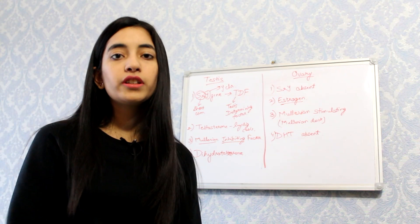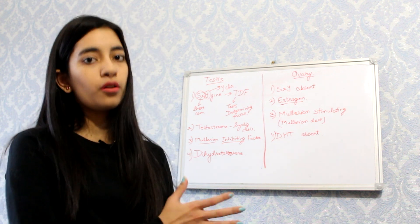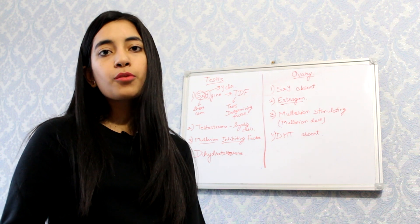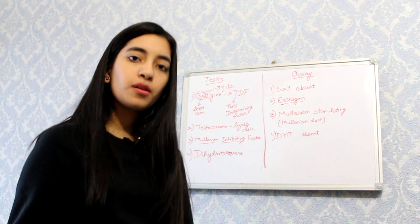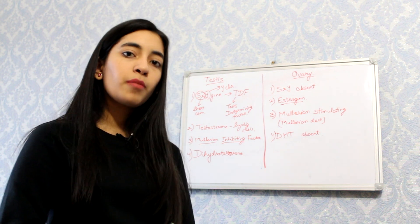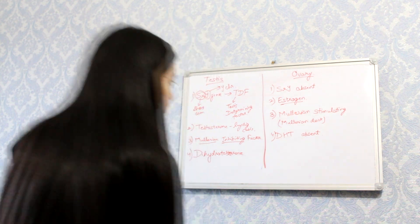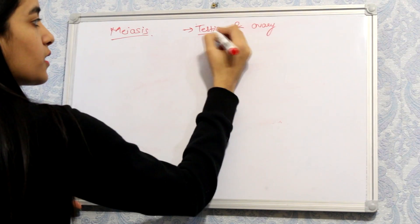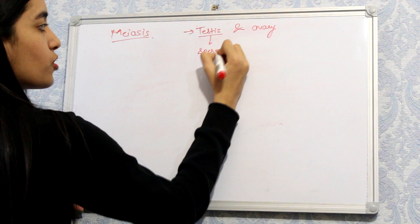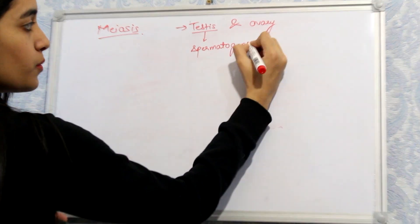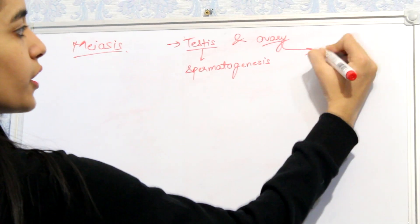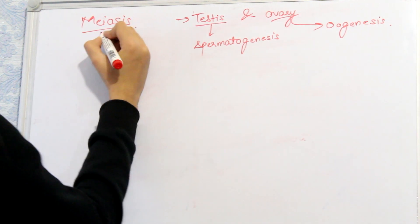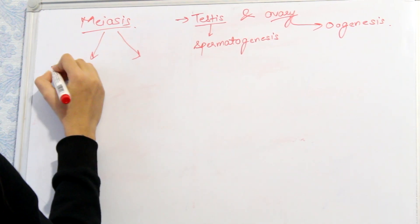Now we'll discuss the first stage from the overview — gametogenesis. In gametogenesis there occurs a process called meiosis, so we'll discuss a summary of meiosis and then discuss spermatogenesis and oogenesis individually. Meiosis occurs in the testes, giving rise to spermatogenesis producing sperms, and in the ovary it gives rise to oogenesis which produces the ovum. There are two stages: meiosis one and meiosis two.